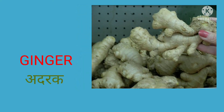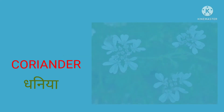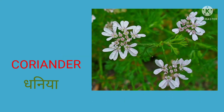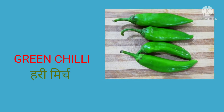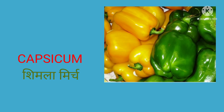This is ginger, in Hindi it's called adrak. This is coriander, in Hindi it's called dhania. This is mint, in Hindi it's called pudina. This is green chili, in Hindi it's called hari mirch. This is capsicum, in Hindi it's called shimla mirch.